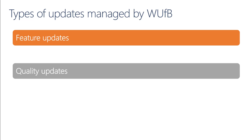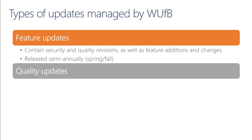Feature updates add new functionalities twice per year to the operating system. They are released semi-annually, usually during the spring and fall time frames — sometimes referred to as H1 and H2 releases, indicating the first or second half of the calendar year. These feature updates contain security and quality updates as well as new features, and most often they also translate to updates to the user interface.